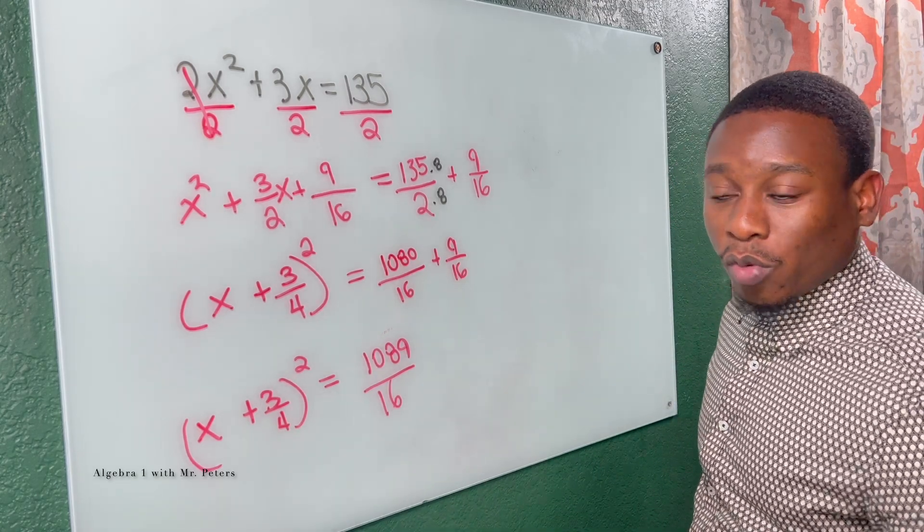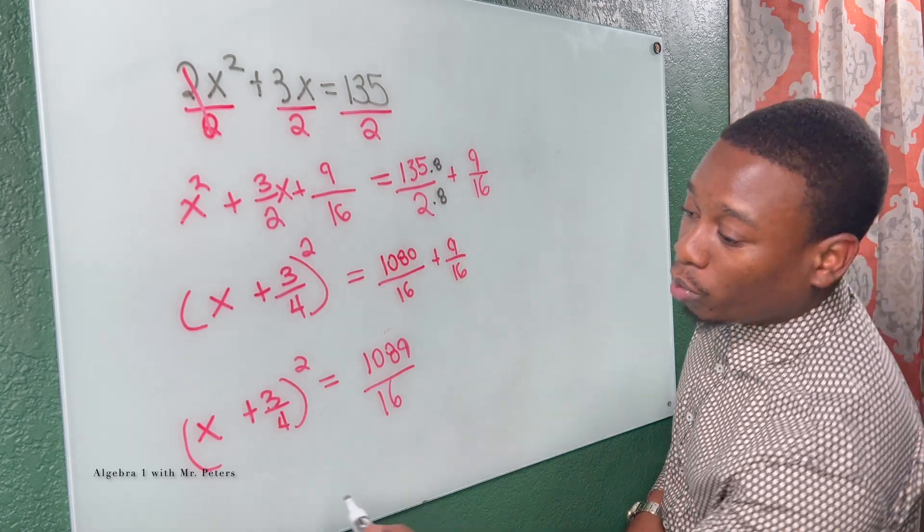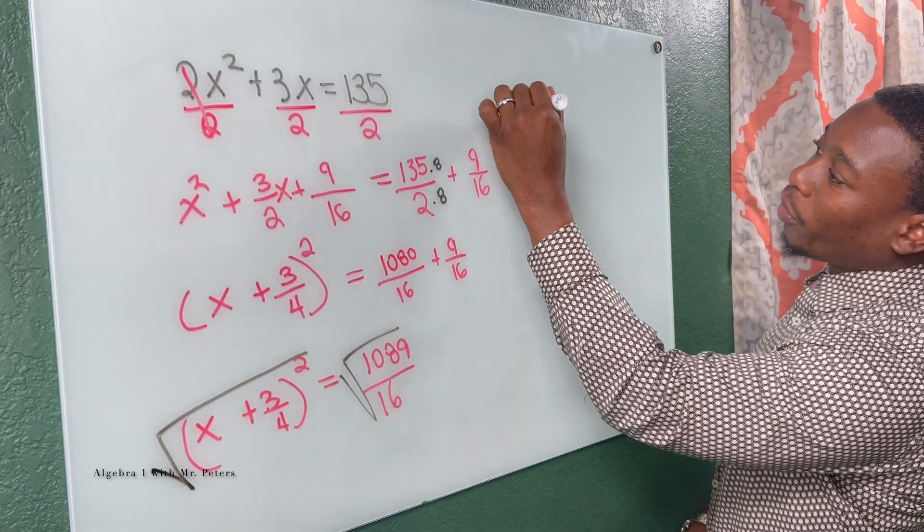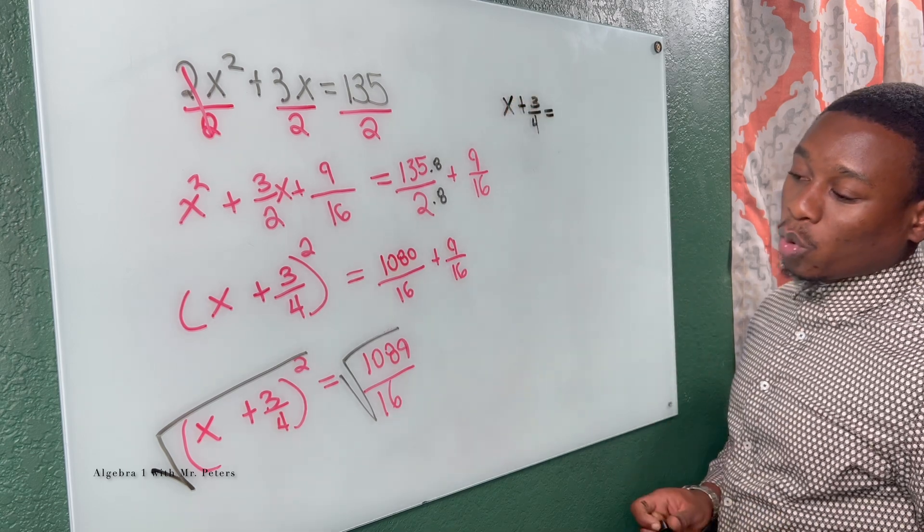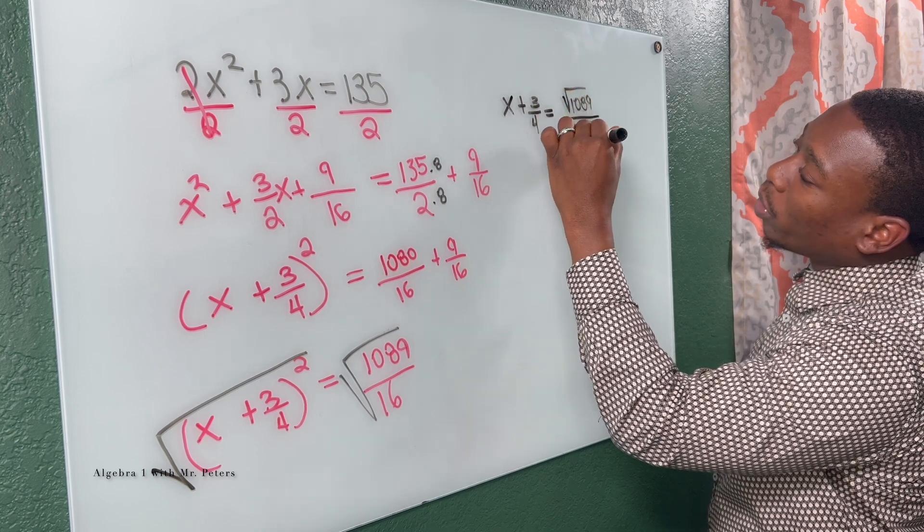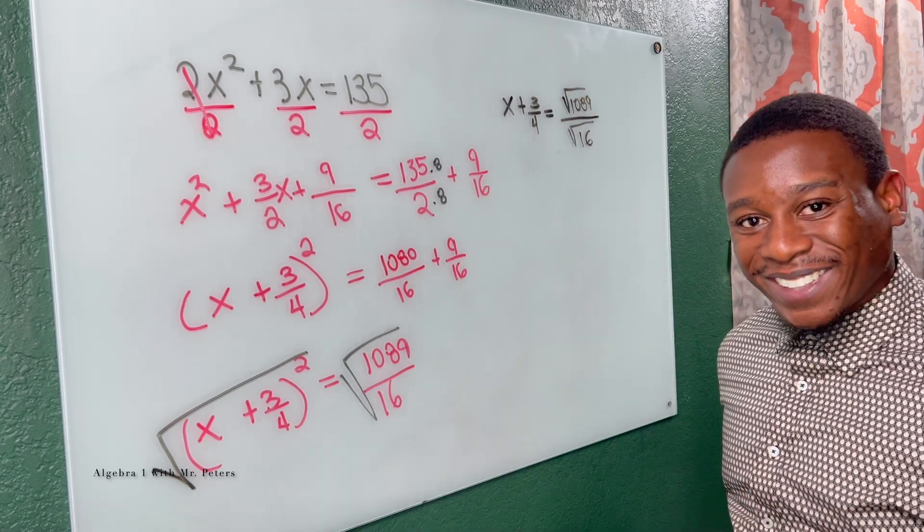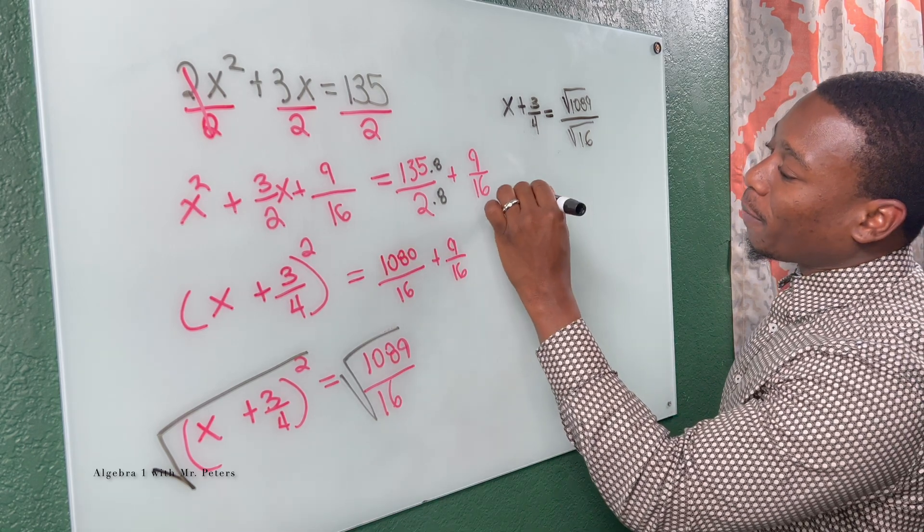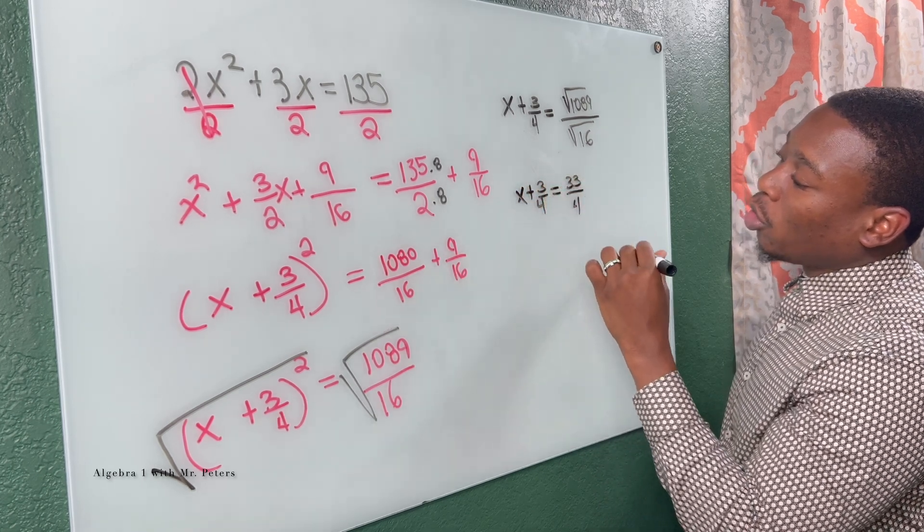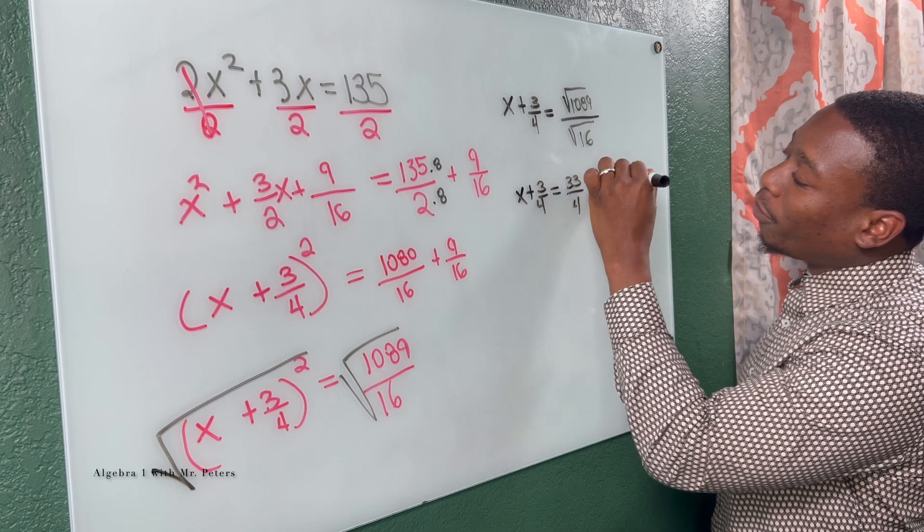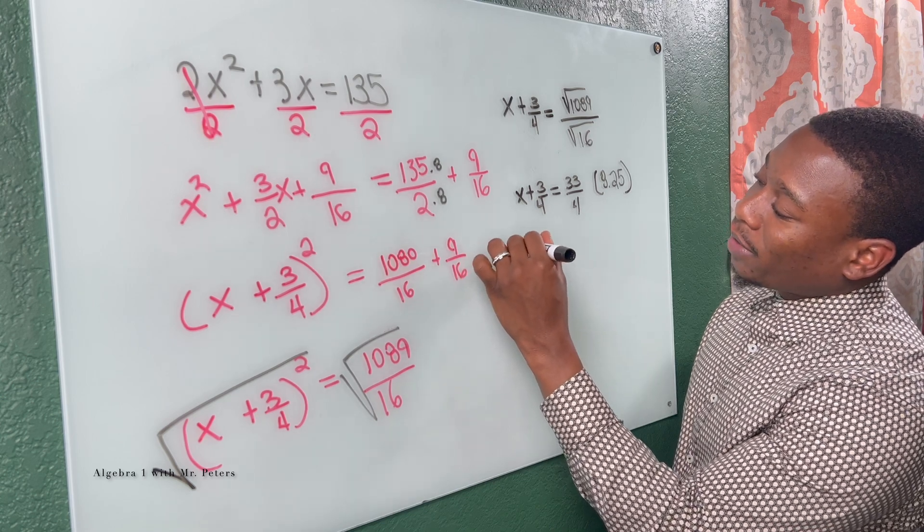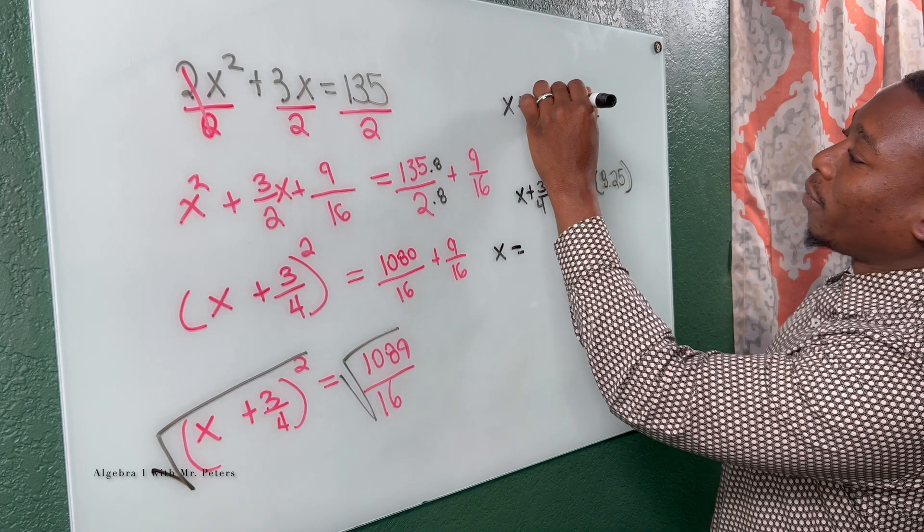So now at this step, we already know we're back to the square root method, meaning I'm gonna take the square root of both sides. Now we're left with X plus three over four is equal to the square root of 1089 divided by the square root of 16. Luckily for us, these are both perfect squares. X plus three over four is equal to 33 over four, which is the same thing as 8.25. So we're gonna switch to 8.25. So now X is equal to, oh hold on, I'm sorry, plus or minus.